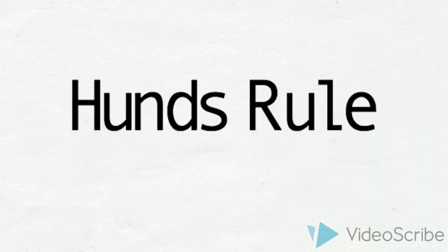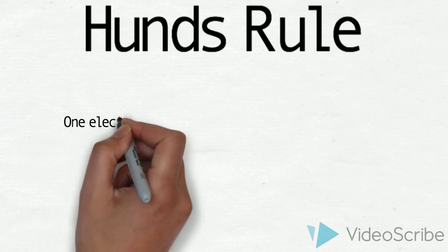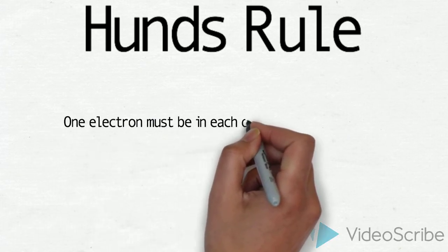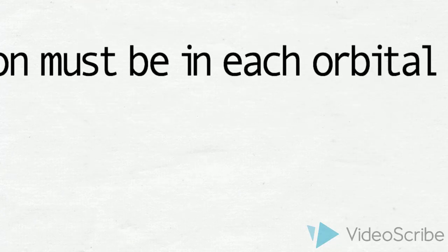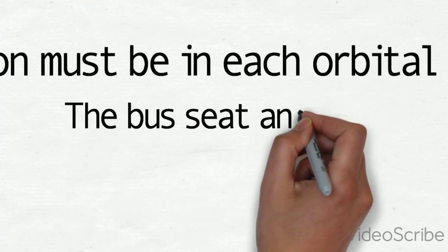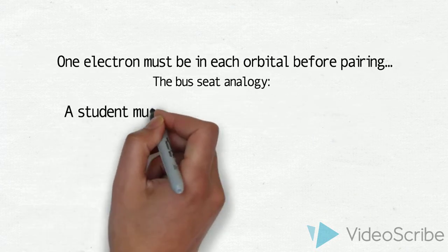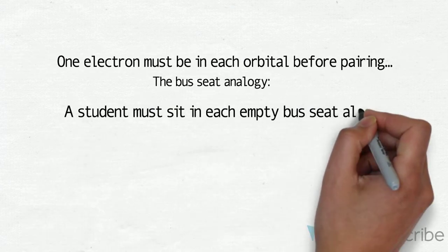Hund's Rule. One electron must be in each orbital before pairing. An analogy for this is the empty bus seat rule. A student must sit in each empty seat alone before sitting in a seat with another student.